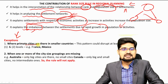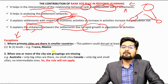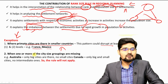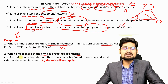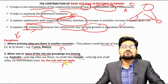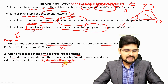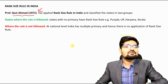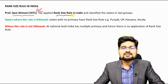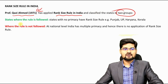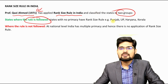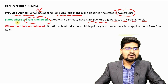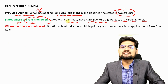There are certain exceptions in the system. France and Mexico do not follow rank size rule, where one or more city-size groupings are missing. Australia and Canada also do not follow this rule. So it is not a universally applied rule. However, rank size rule does have application in India — from the study of Kazi Emad in 1971, India can be grouped into states that follow rank size rule such as Punjab, UP, Haryana, and Kerala.